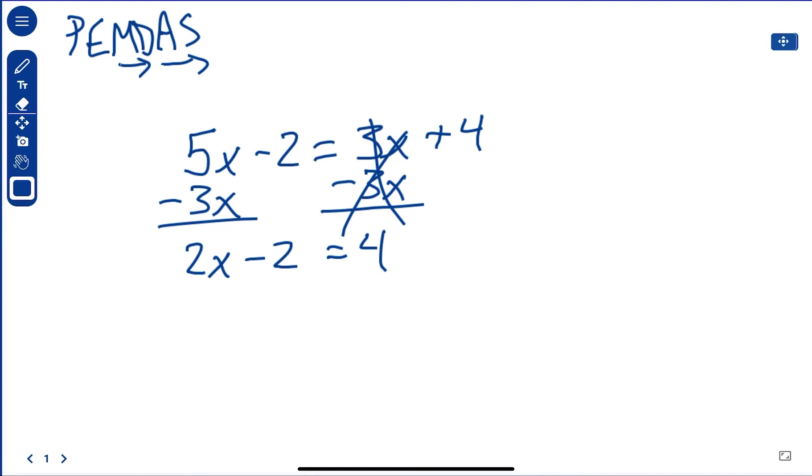It has to be 2X minus 2 equals 4. Now, I also want to get my regular integers together. So I'm going to do the opposite because we can't do anything. We're going to do the opposite. That cancels over here. It leaves me with 6. So I got 2X equals 6.